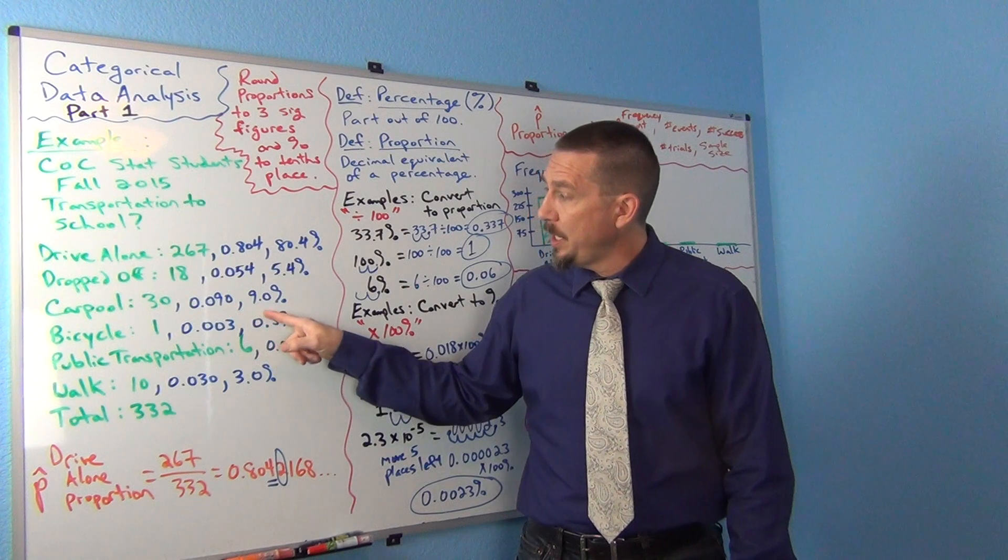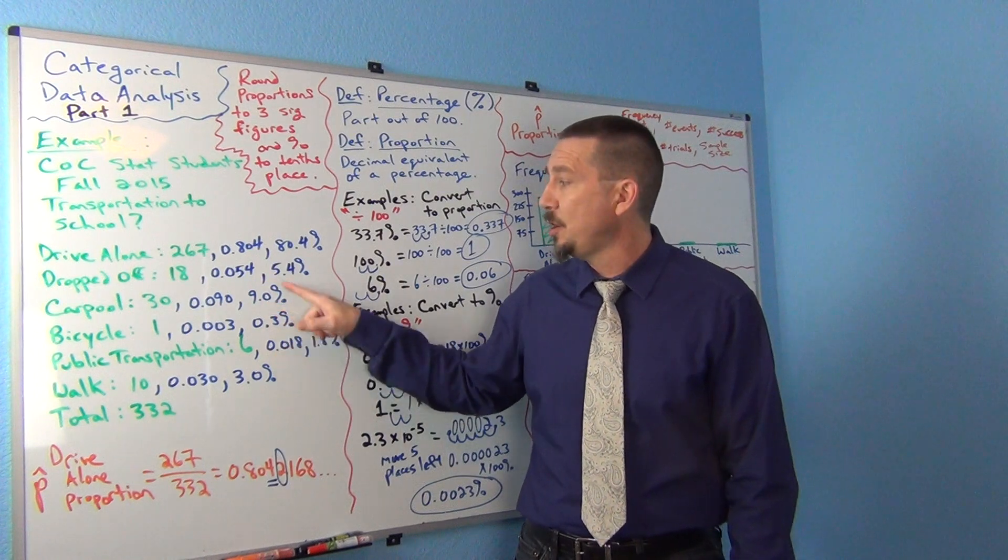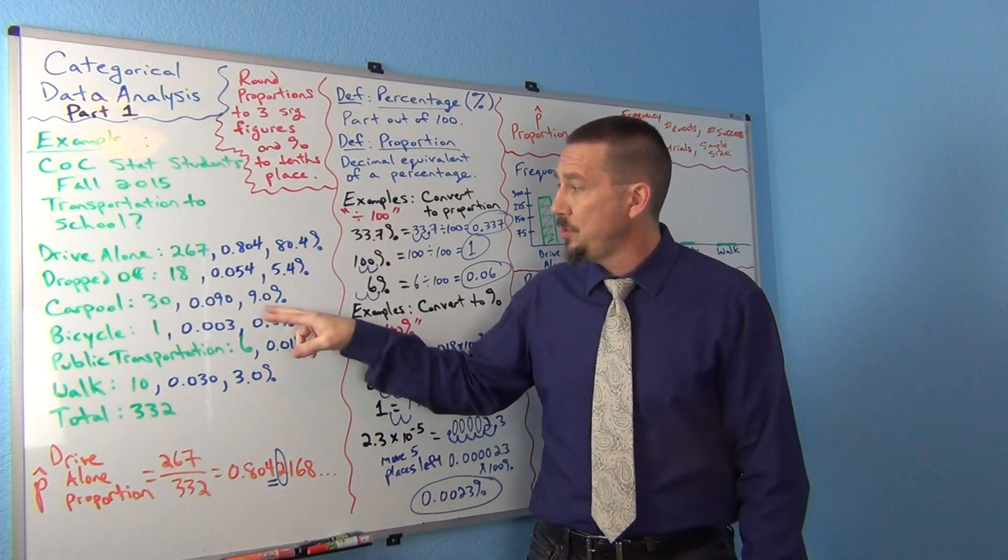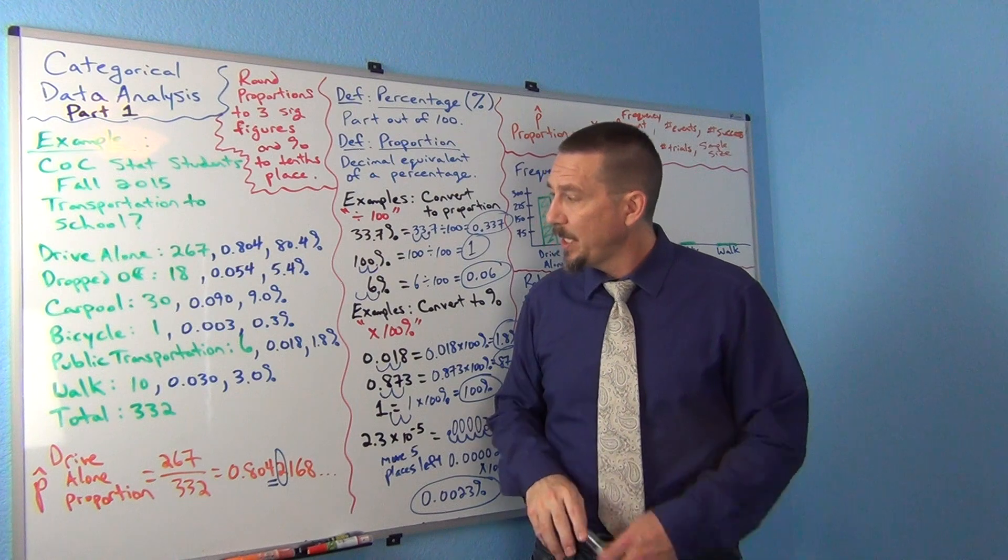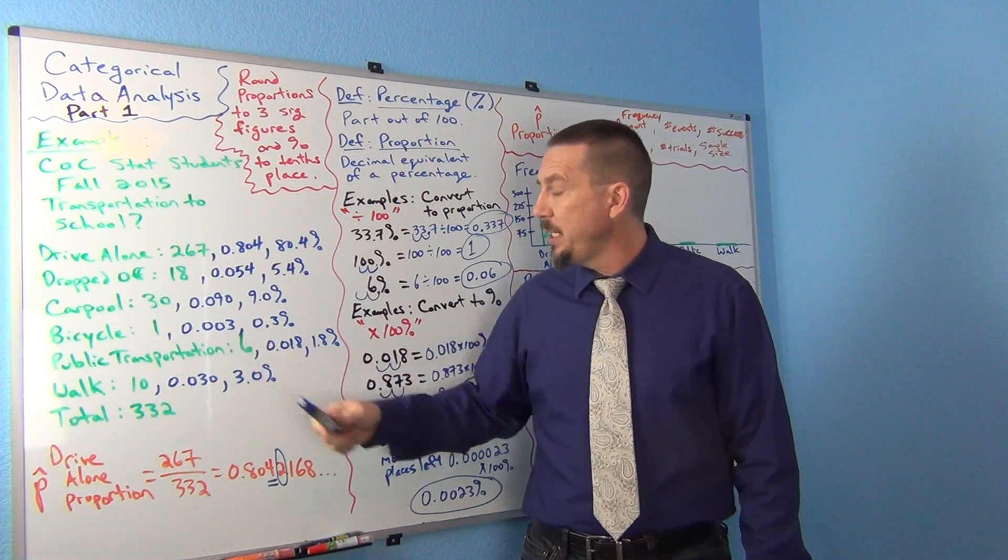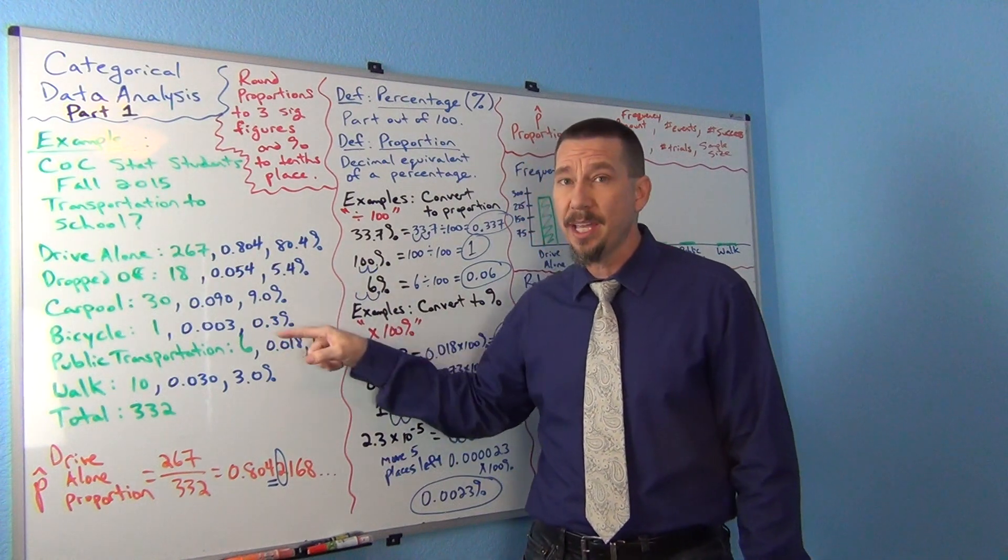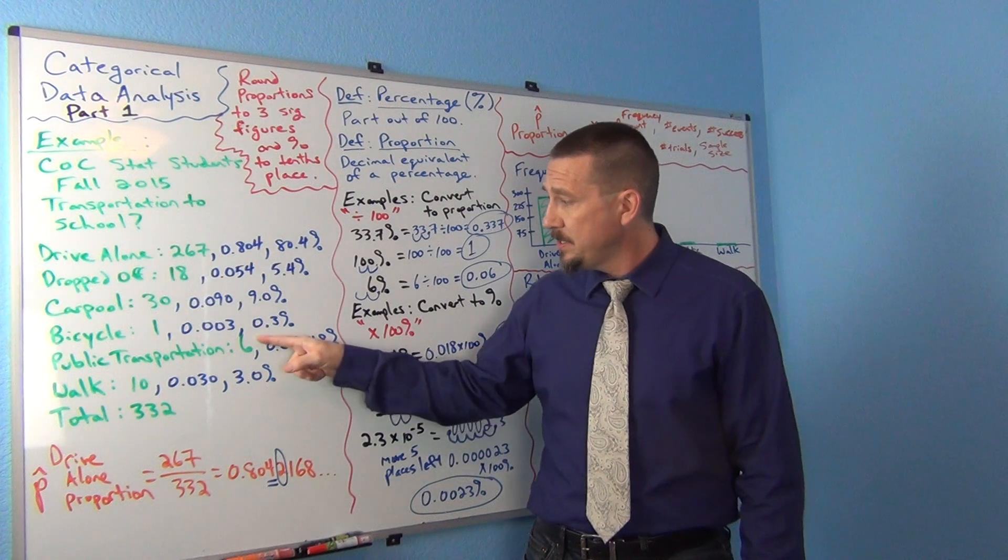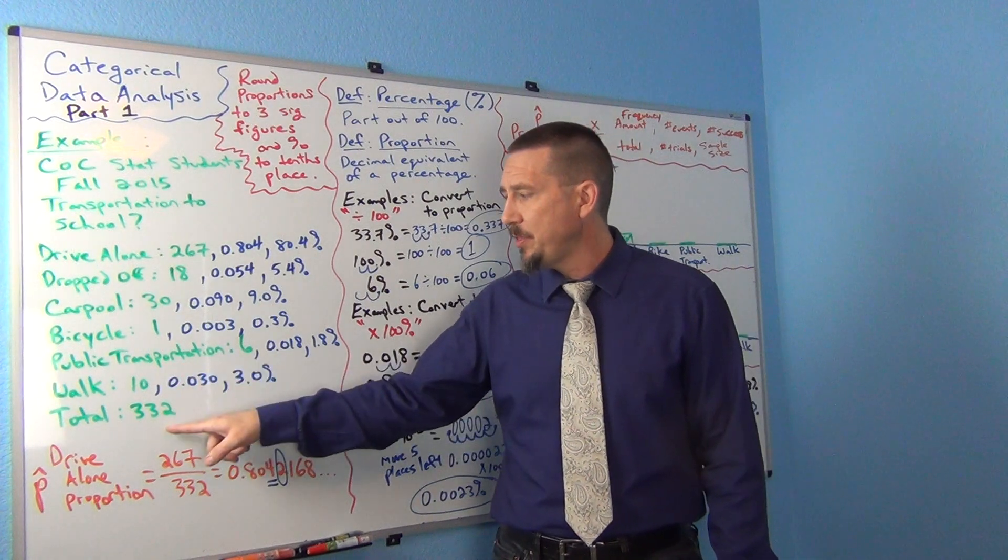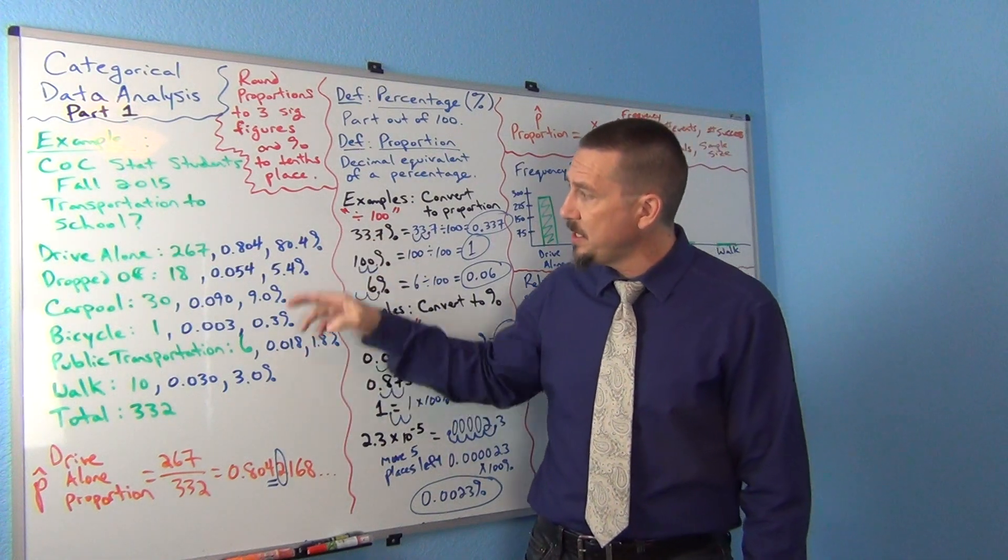So 0.090, and again that would be 9% or 9.0%. Again, notice I put the 0.0 there just to tell people that I rounded it to that accuracy. And if you wrote that at 9%, a lot of times people think you rounded to the ones place there on the percentage. 1 divided by 332, if I round that, that's 0.003 or 0.3%. Now be careful, 0.3% is not 3%, right? This is less than 1%. It's 3 tenths of a percent. 6 divided by 332 gives me 0.018 or 1.8%. 10 divided by 332 is 0.030 or 3.0%. So here's my percentages and these are my proportions.